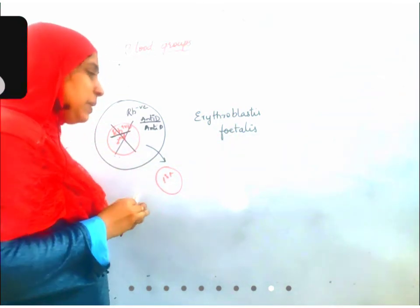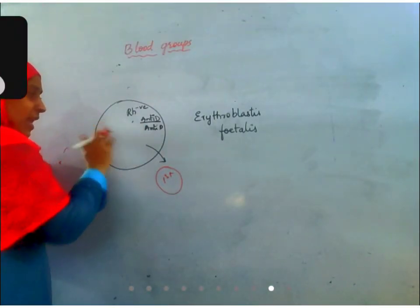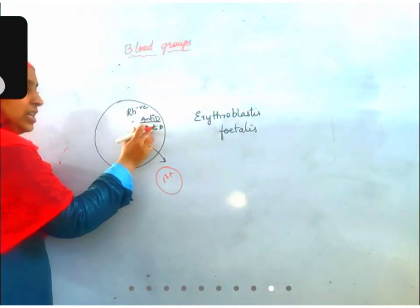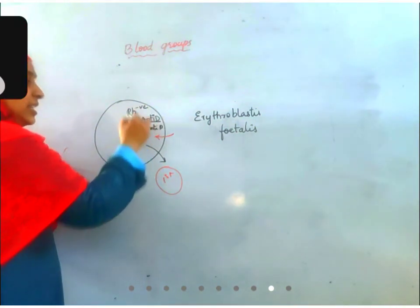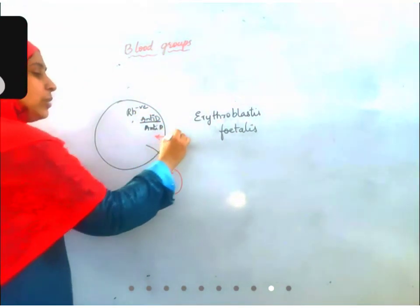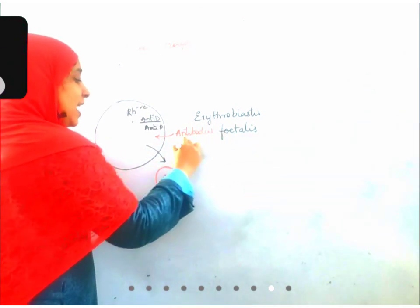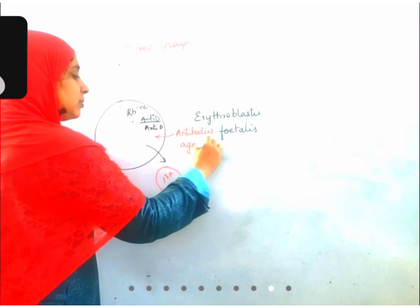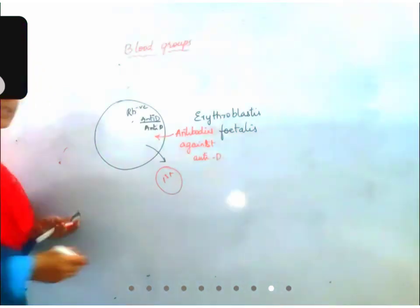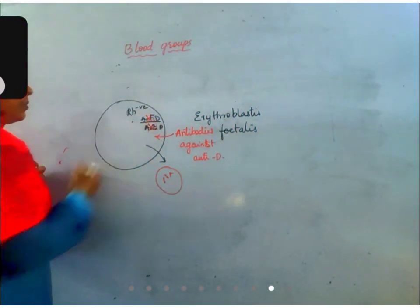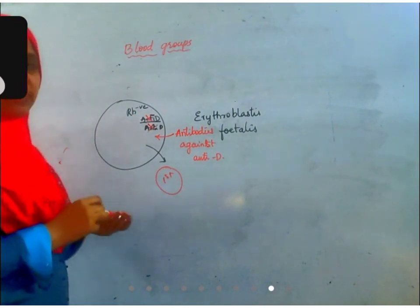If the second baby is also RH positive, there will be an interaction between the anti-D antibodies in the mother and the RH antigen on the RBC of the second child, and the baby may die. This is called erythroblastosis fetalis — the erythroblasts, which are precursors of RBC, are dying in the fetal stage. This can be prevented: after the first pregnancy, before a second pregnancy occurs, antibodies against anti-D are administered into the mother's body to neutralize the anti-D antibodies, making the second pregnancy safe.